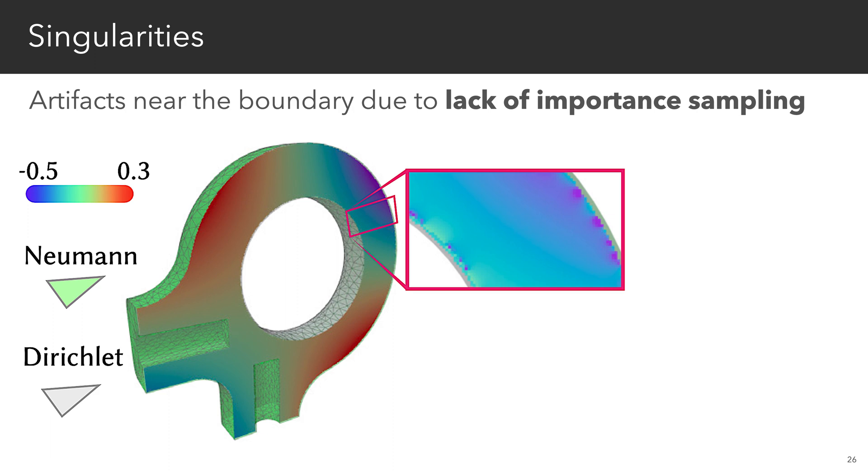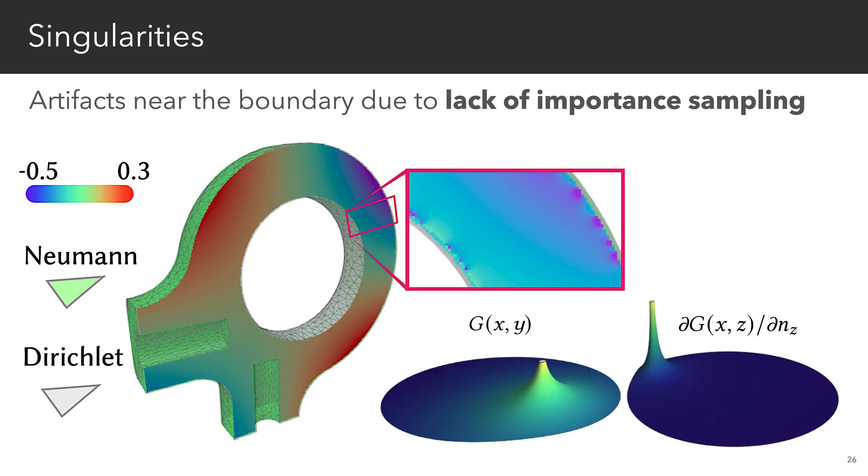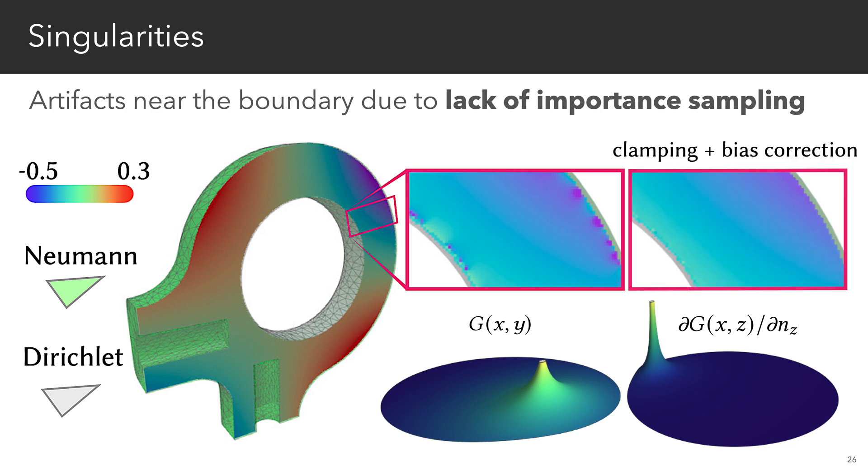Finally, simply reusing uniformly sampled cache points can result in artifacts near the boundary because the greens function and Poisson kernel are weakly singular, and we don't importance sample them. Virtual point-light methods in rendering as well as the boundary element method also suffer from similar artifacts near the boundary. In our paper, we describe how to mitigate these artifacts by adapting ideas from virtual point-light methods.